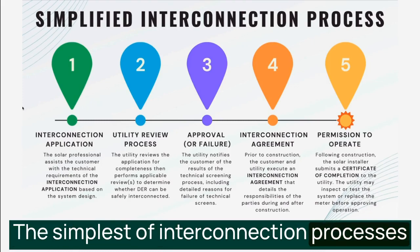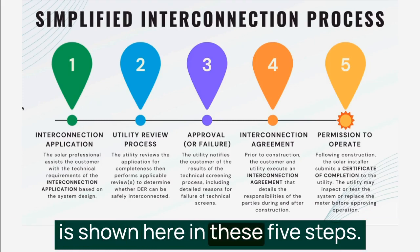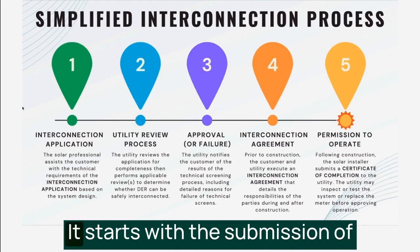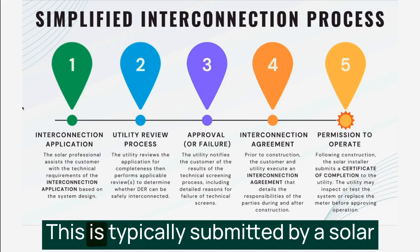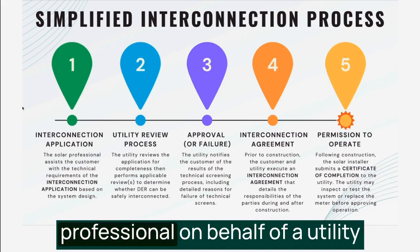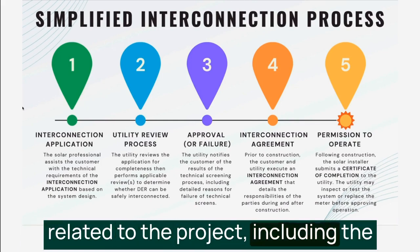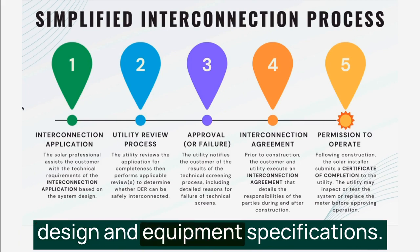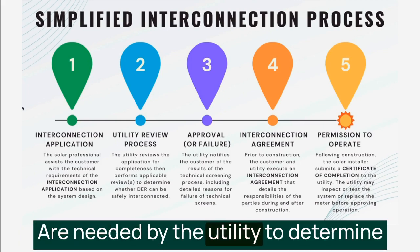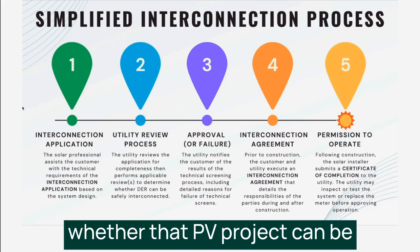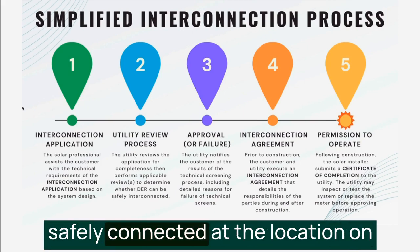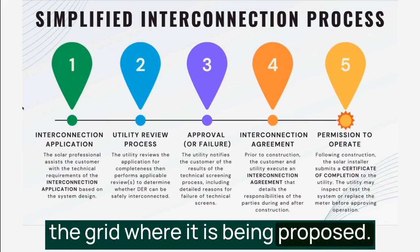The simplest of interconnection processes is shown here in these five steps. It starts with the submission of an interconnection application, typically submitted by a solar professional on behalf of a utility customer. It contains technical details related to the project, including the design and equipment specifications needed by the utility to determine whether that PV project can be safely connected at the proposed location on the grid.